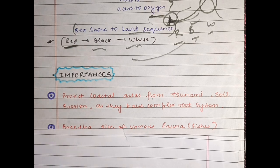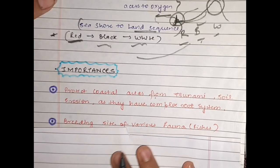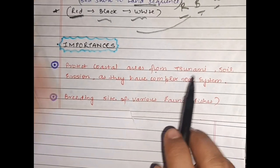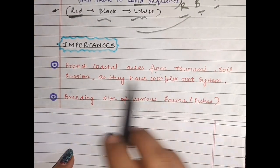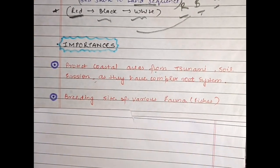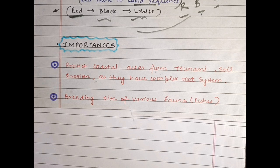Now let's read the importance of mangroves. The first importance is to protect the coastal area from tsunami and soil erosion, as they have a complex root system. The root system — which we have learned includes air root, prop root, and stilt root — is very complex and plays an important role on coastal areas: it protects against tsunamis and prevents soil erosion.